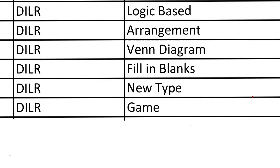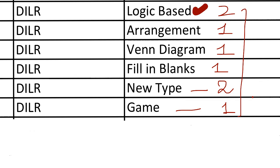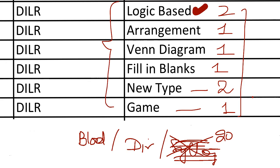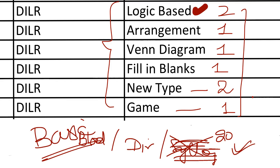This is the overall scope for the DLR section. There are typically two sets on logic-based DI, one on arrangement, one on diagrams, one on fill-in-the-blanks, one or two new-type sets, and one set on games. Most students waste time on blood relationships, direction sense, and syllogisms — but in the last 20 years there has been no syllogism question in the CAT paper. Focus on the relevant topics. In basics we cover the basic level of these topics, and in the advanced phase we cover the advanced level.